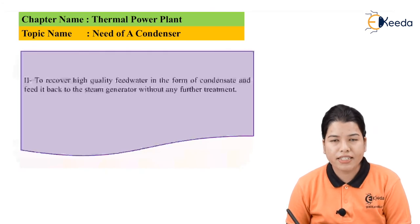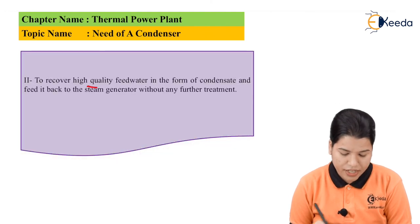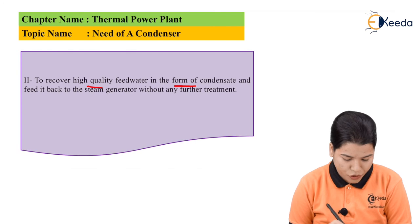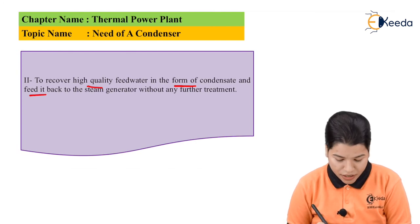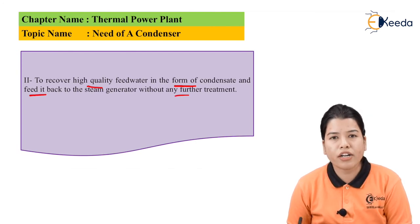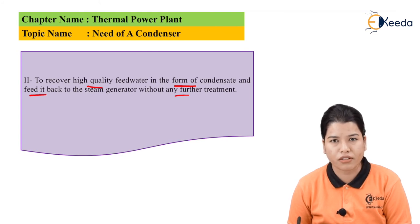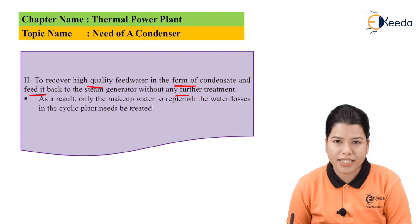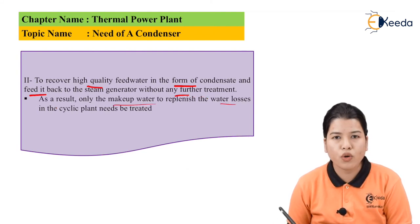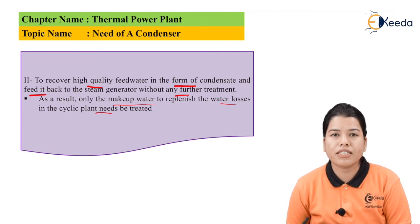The second need for the use of a condenser is to recover high quality feed water in the form of condensate and to feed it back to the steam turbine without any further treatment. The feed water can be used again in the form of condensate for heating the water. As a result, only the makeup water to replenish the water losses in the cyclic plant needs to be treated.